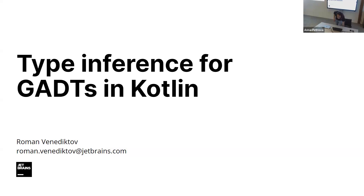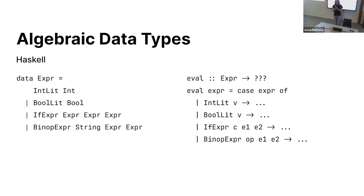Let's start with what algebraic data types are. Generally, the idea behind them is that you are enumerating all possible constructors and their content. For example, in Haskell syntax, you may define an expression class and all of the possible nodes for it using the syntax, and because you are guaranteed that there are no other constructors, you may match on the value of this type, and the compiler will force you to add an else branch. It may check that the matching is exhaustive.